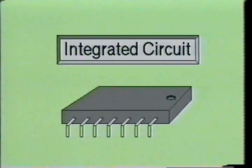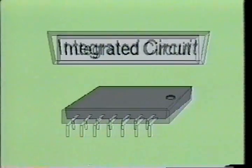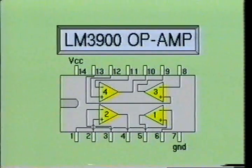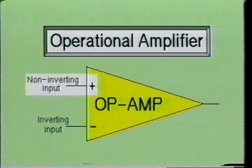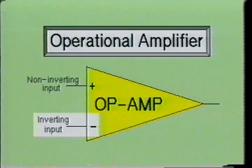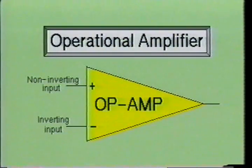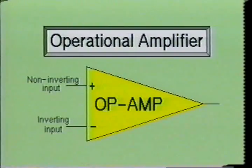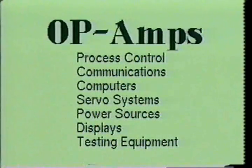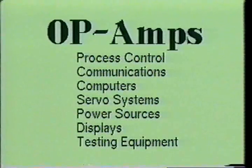Most amplifiers used in today's modern equipment are contained in a single package called an integrated circuit. These amplifiers are usually a multi-stage type with a non-inverting and inverting input. The input marked with the plus is called the non-inverting input, and the input marked with the minus is called the inverting input. One of the most common IC amplifiers is the operational amplifier, or op-amp for short. Today's operational amplifier is so inexpensive that millions are used in circuits throughout the world. Their low cost, versatility, and dependability have expanded their use far beyond those envisioned by the early designers. Many present day uses of the op-amp are in the fields of process control, communications, computers, servo systems, power and signal sources, displays, and testing or measuring systems. Basically, the op-amp is a very good high-gain DC amplifier.